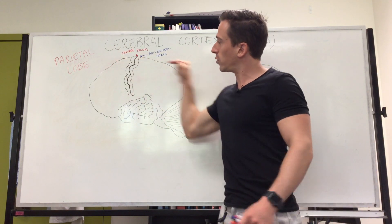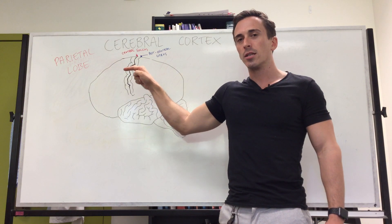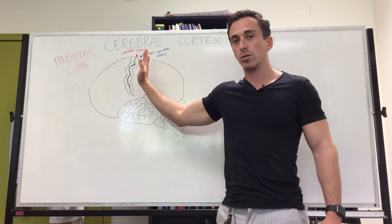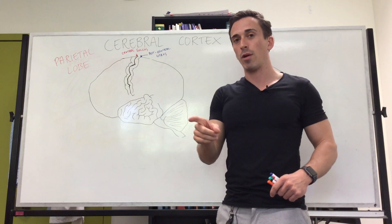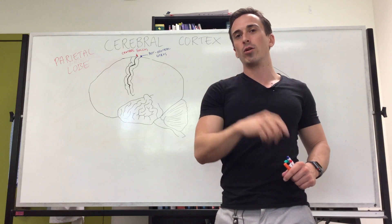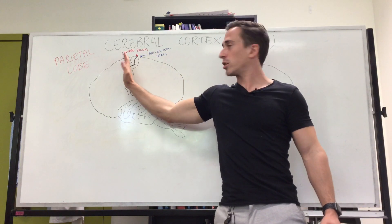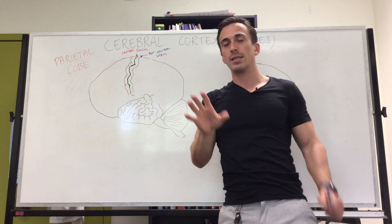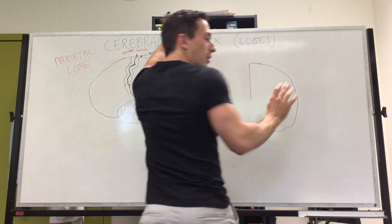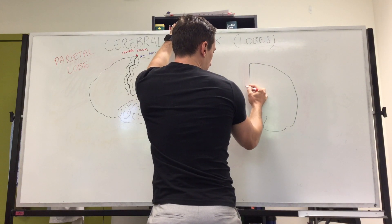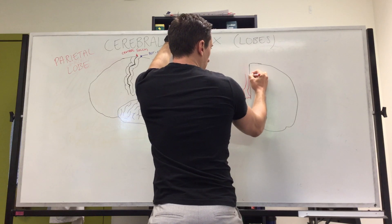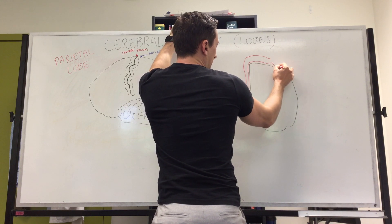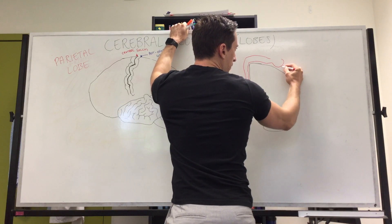Just like we did with the frontal lobe video where I showed you the motor homunculus — how parts of the body are mapped to the brain — we've got the same thing for the somatosensory cortex, but mapped slightly differently. If we do a frontal section and look in, we've got the feet down here, then legs, then abdomen, neck, and the back of the head.